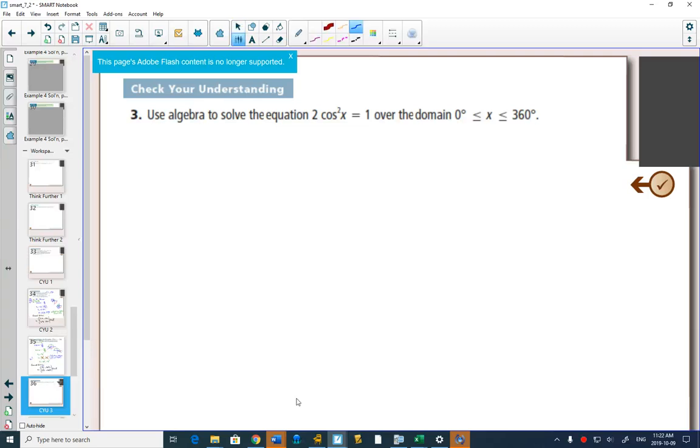Use algebra to solve the equation. And we have 2cos²x = 1. So again, we want to get cos by itself. I can get the cos squared by itself by dividing both sides by 2.